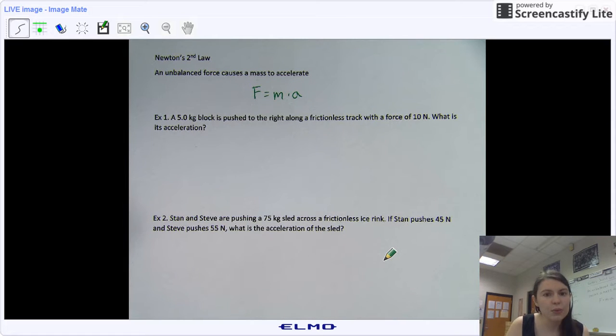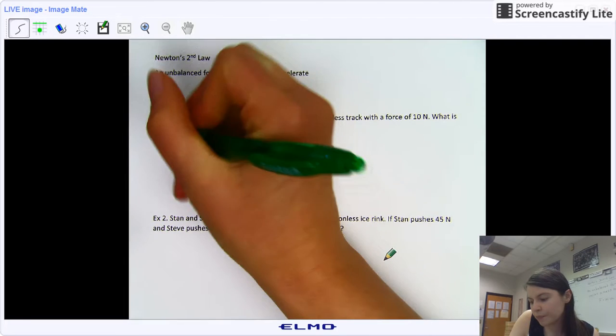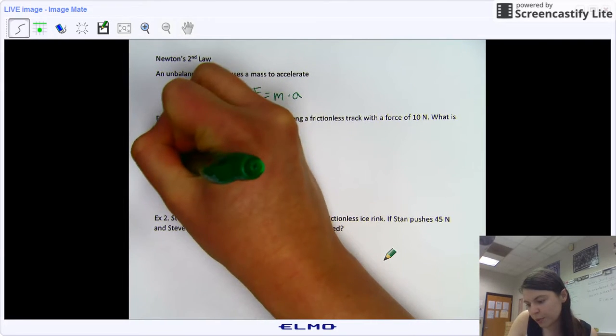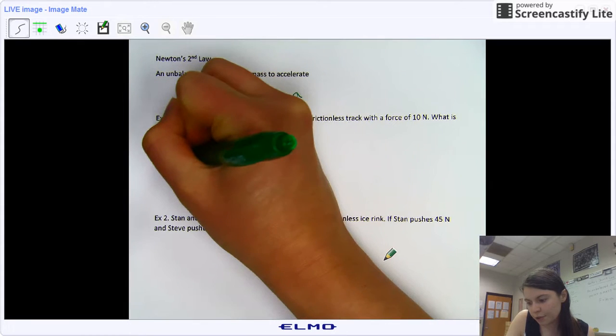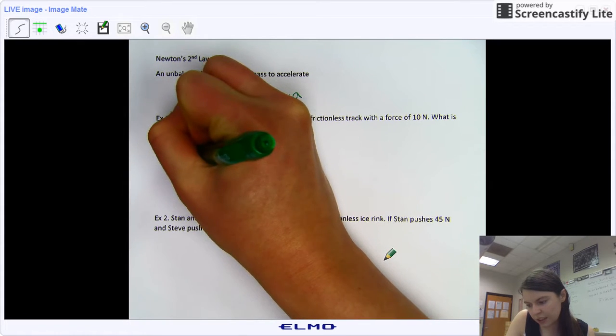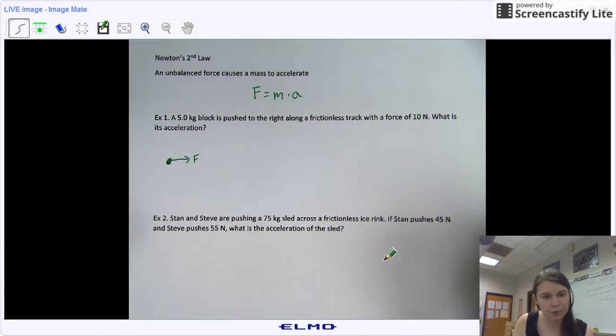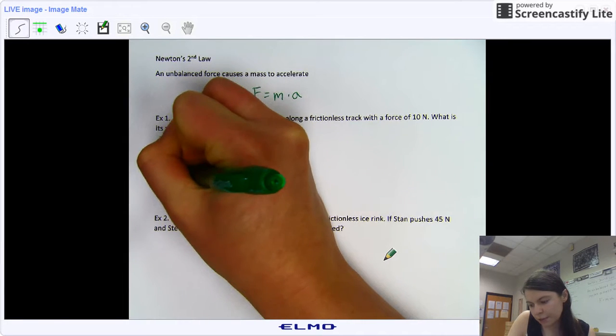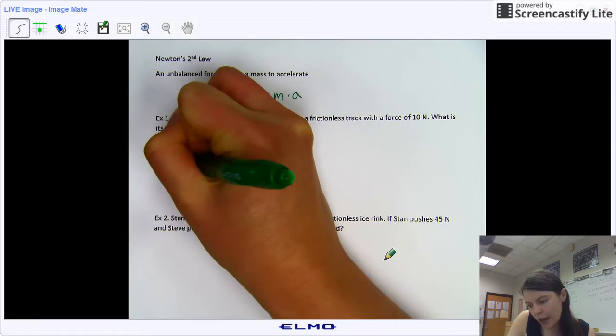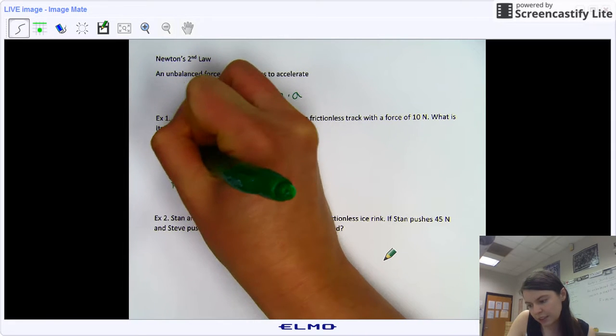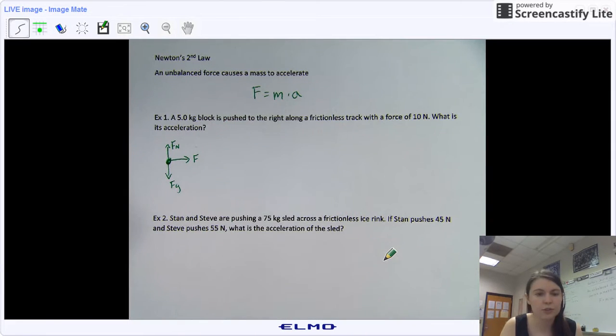As with most of our force problems, we're going to start with a free body diagram. We know we're going to have an object, a block that we're going to represent as our dot. The forces acting on it are the obvious force, our push force, but we're also going to have gravity and a normal force because it is on a frictionless track. There's no friction.